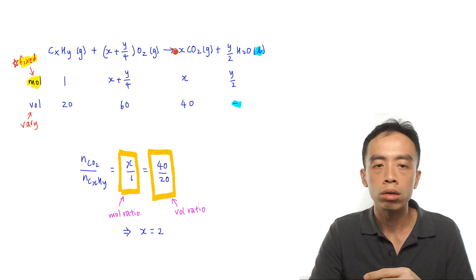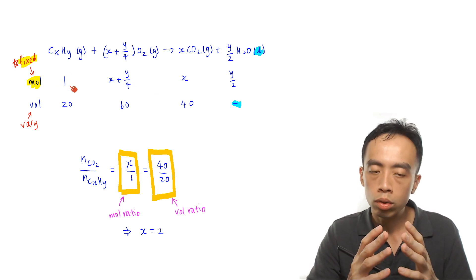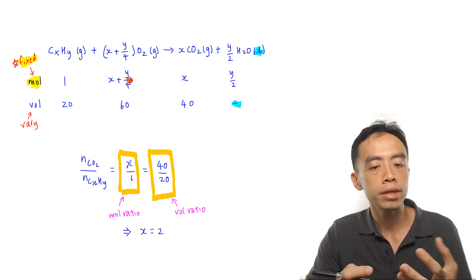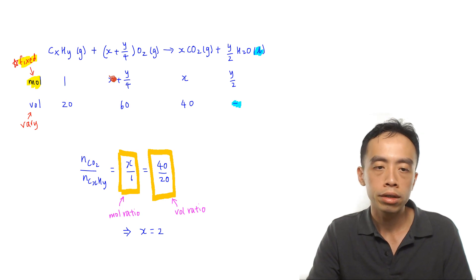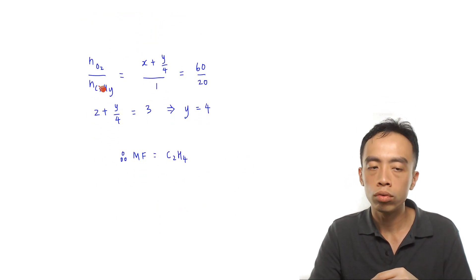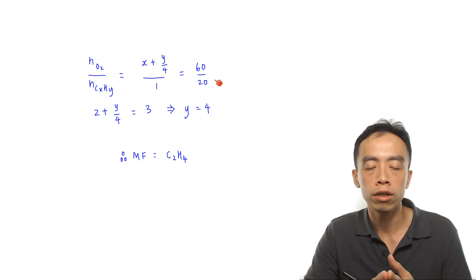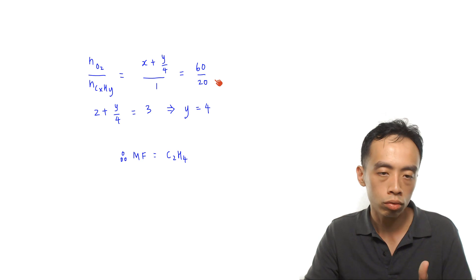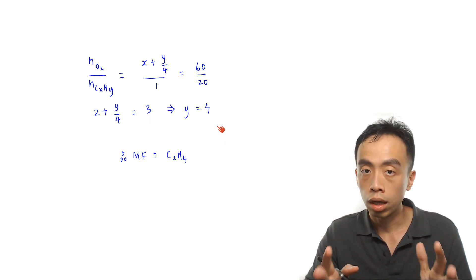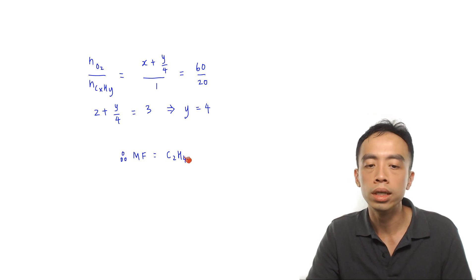Next, compare the mole ratio to volume ratio for oxygen: (X + Y/4) / 1 = 60 / 20 = 3. Substituting X = 2: 2 + Y/4 = 3, so Y/4 = 1, giving Y = 4. We have now solved for both X and Y, so the molecular formula for this hydrocarbon is C₂H₄.